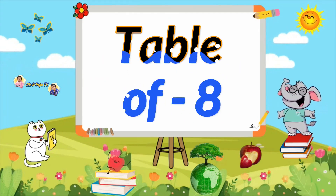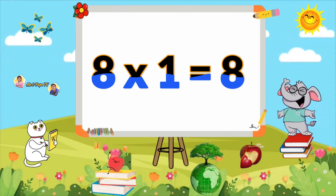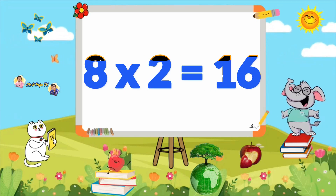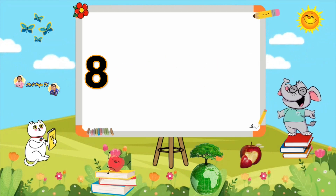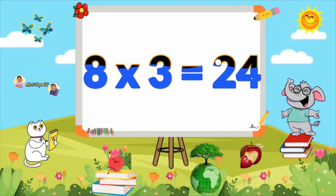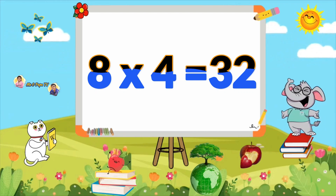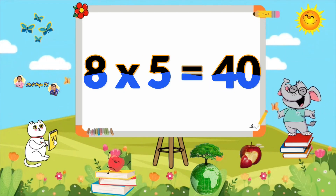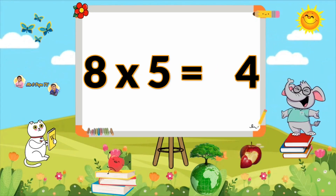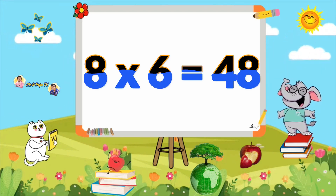Learn Table of 8. 8×1=8, 8×2=16, 8×3=24, 8×4=32, 8×5=40, 8×6=48.